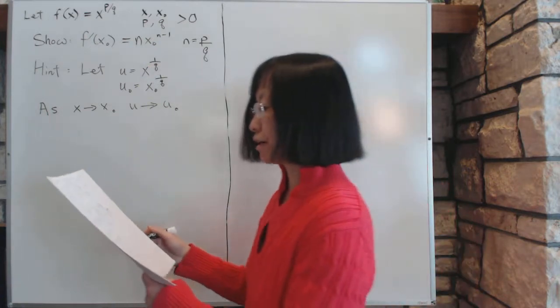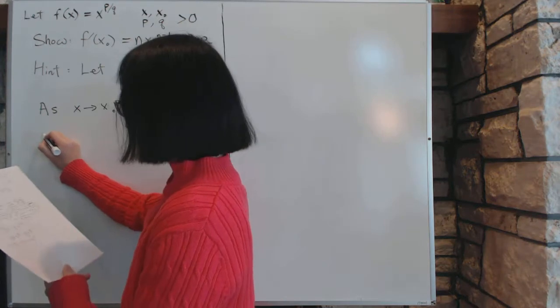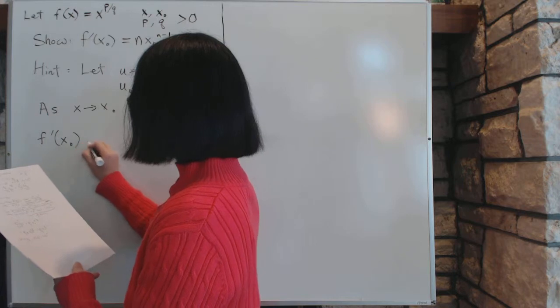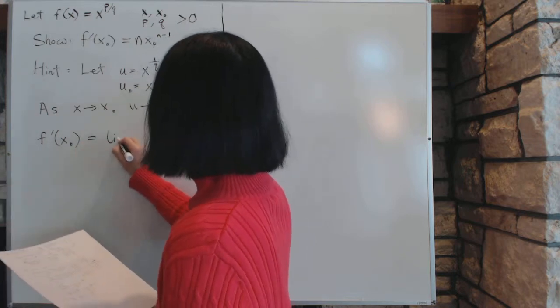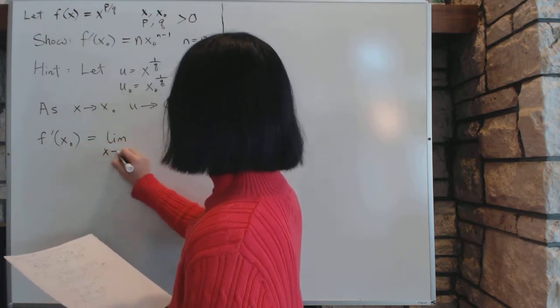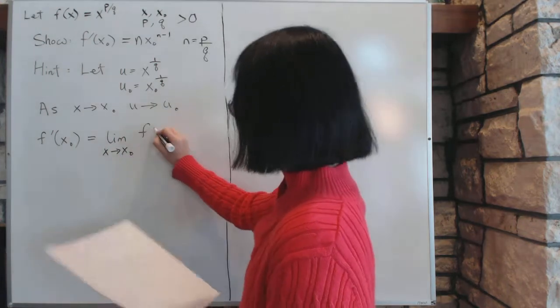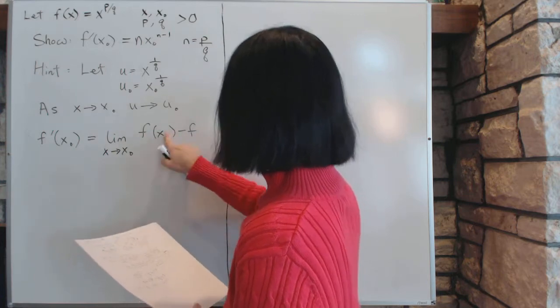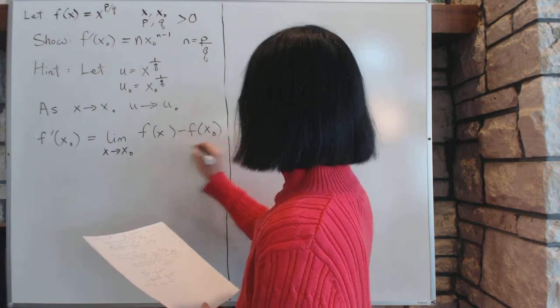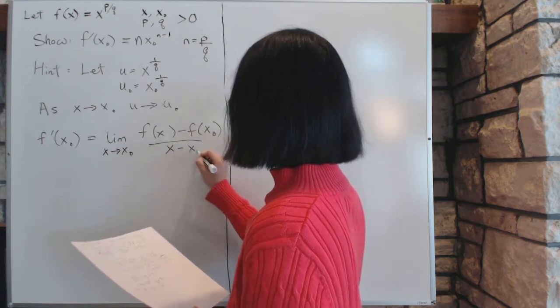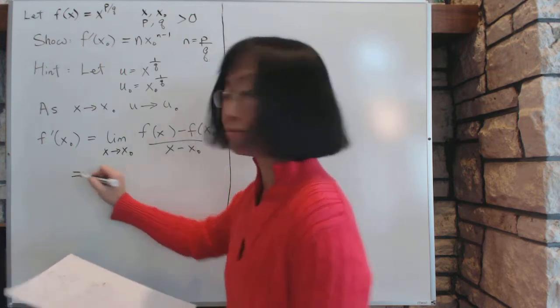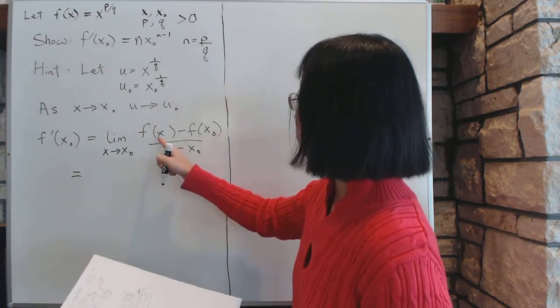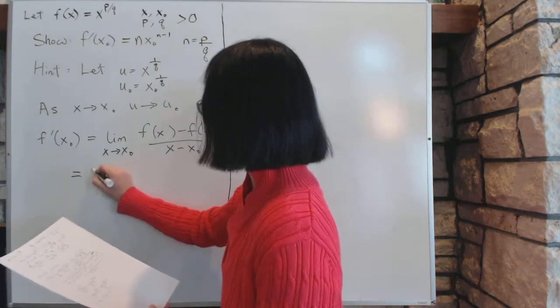So let's look at what f prime is. Now f prime of x is going to be equal to the limit by definition as x approaches x0 of this particular fraction, which is f(x) minus f(x0) divided by x minus x0. And we are going to do algebra from this point to do all the plugging in and substituting.